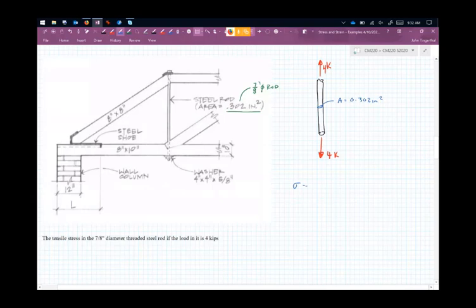So our stress, sigma, is equal to force divided by area, 4,000 pounds or 4 kips divided by 0.302 inches squared.